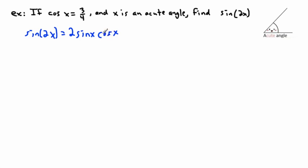We know what cos x is — that's three over four. But we don't know sine of x, so we need to find that. That's why we need to do a little bit of thinking. Maybe we can use the Pythagorean identity — I think that's a good approach.